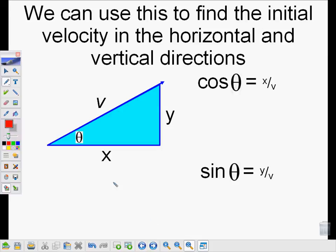So we're going to use this relationship now to find the initial velocity in the horizontal and vertical directions. If I want to know how fast something is moving horizontally compared to how fast it's moving vertically, I can use those previously determined relationships.